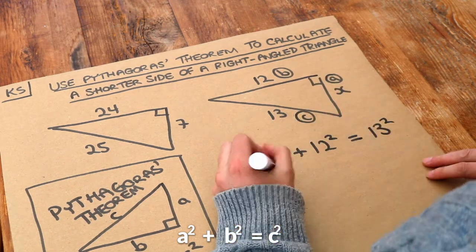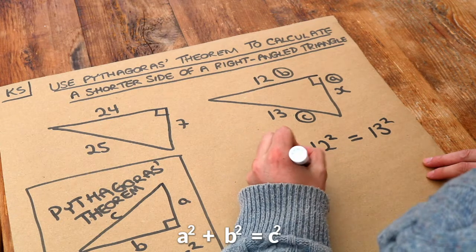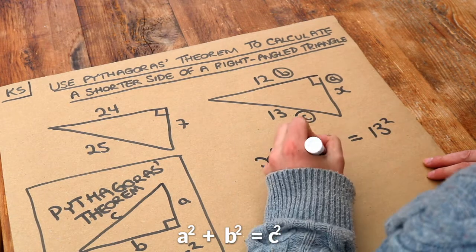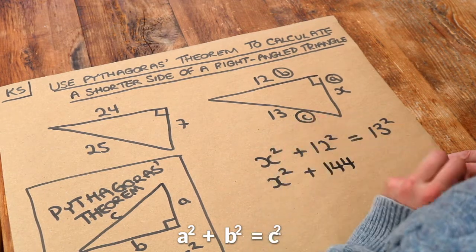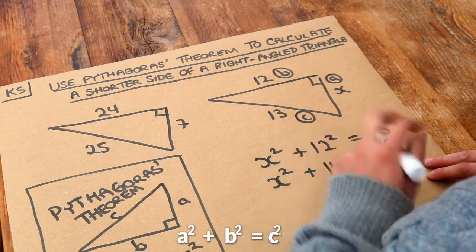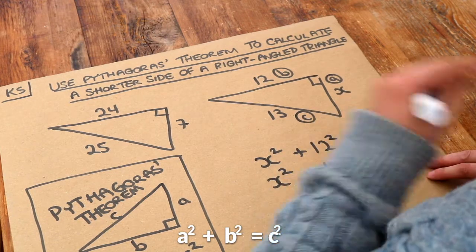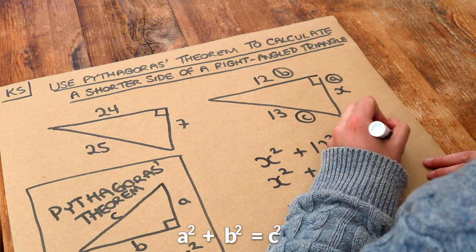Let's simplify each of the bits of the equation. X squared plus, well 12 squared is 144. Remember that 12 squared means 12 times 12. 13 squared means 13 times 13, that's 169.